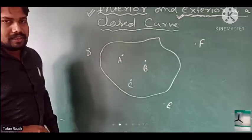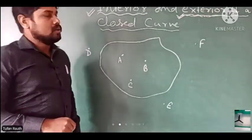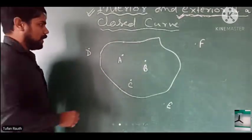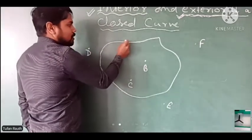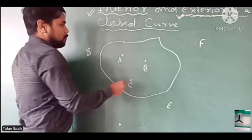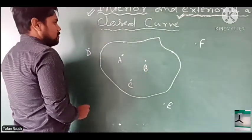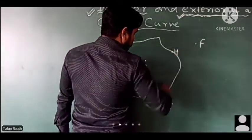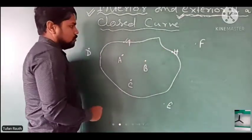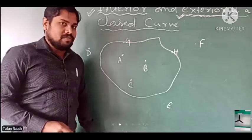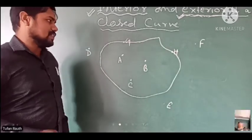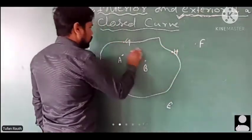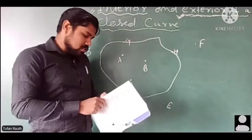Interior means inside and exterior means outside of the curve. One more case: a point may lie on the curve itself. If two points lie on the curve itself, then we say those points are on the curve. So: interior is inside, exterior is outside, and a point can also be on the circle itself.